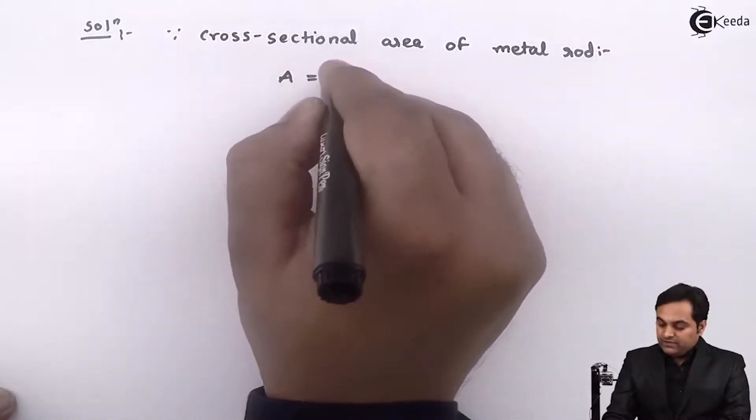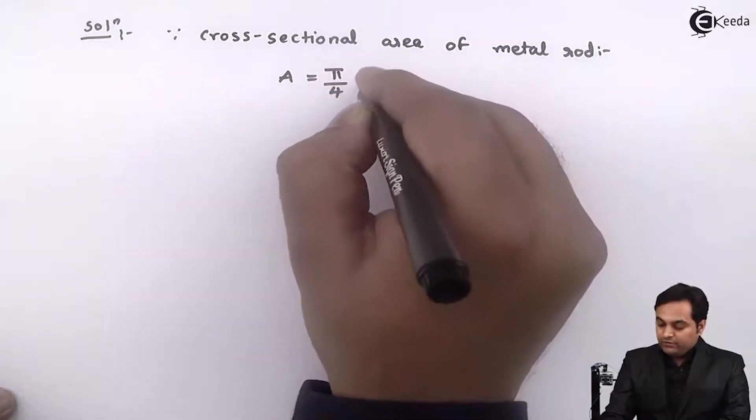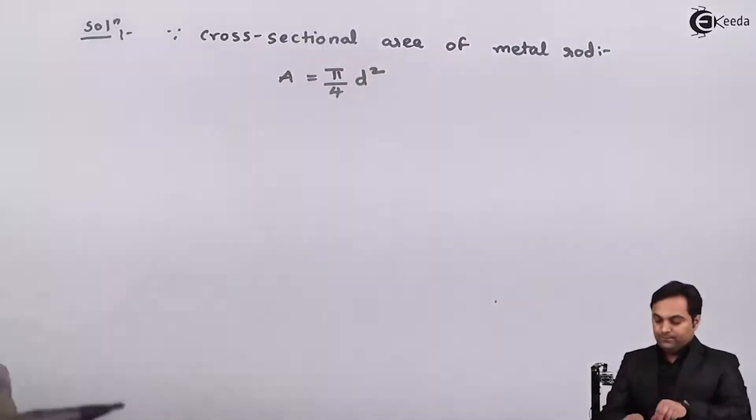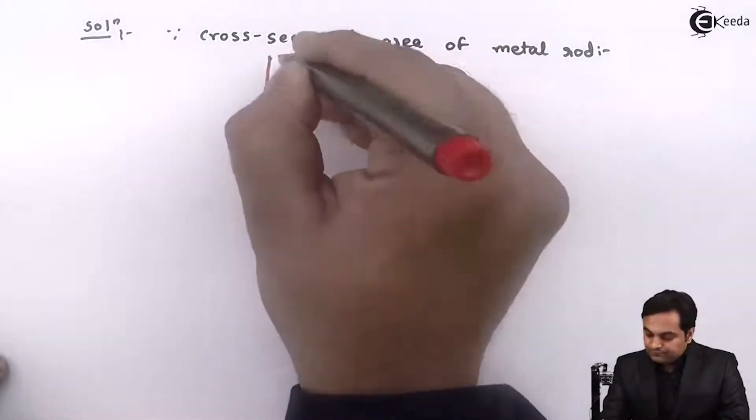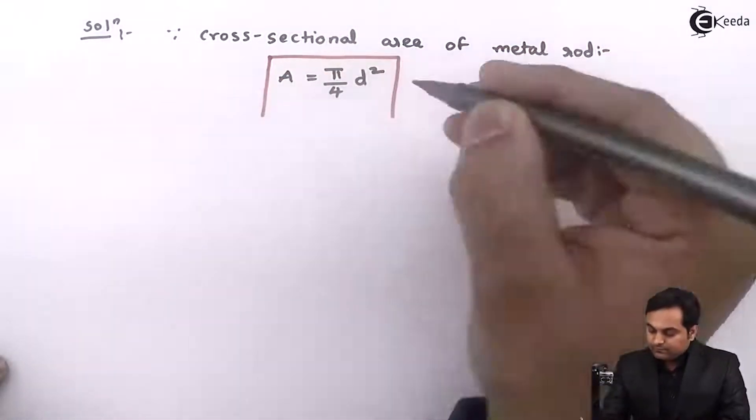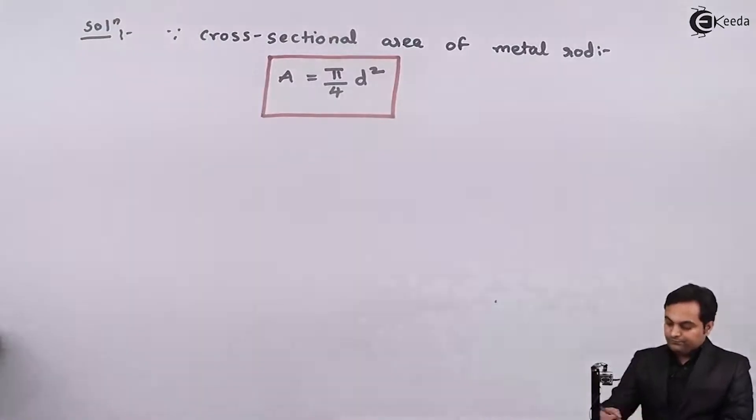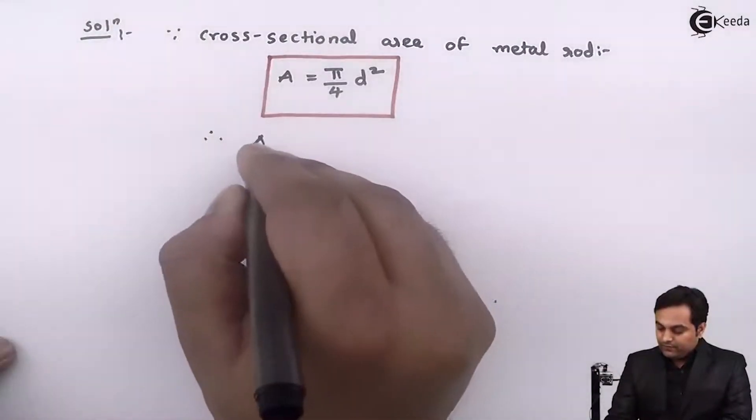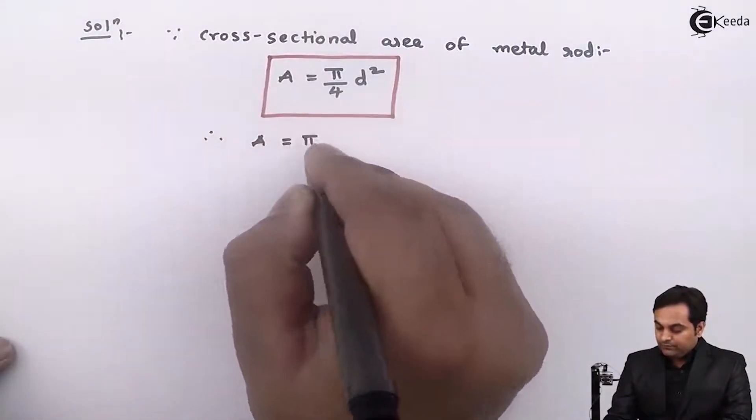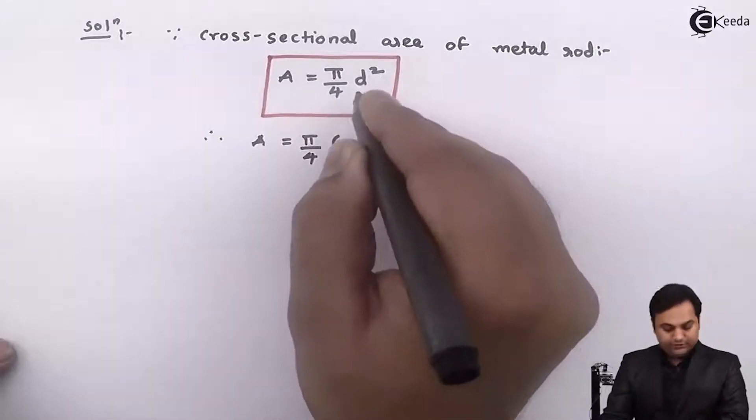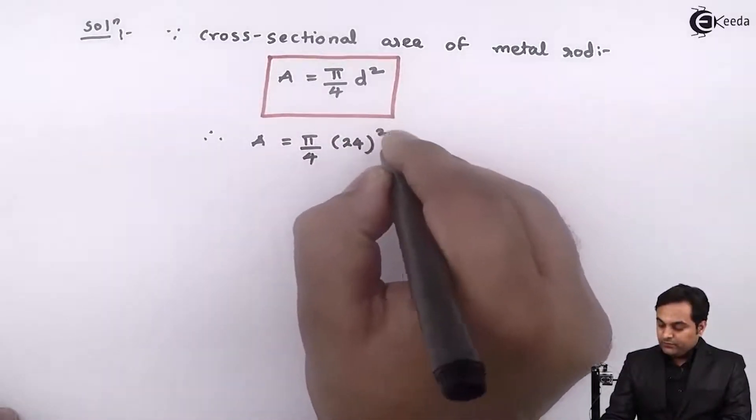A and this is equal to π/4 d². So therefore capital A is equal to π/4 into diameter is 24 square.